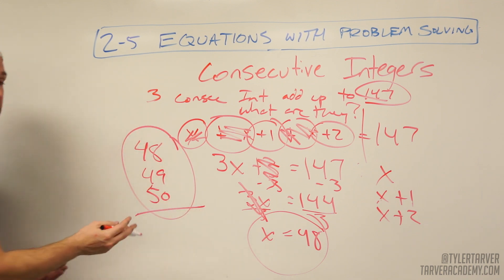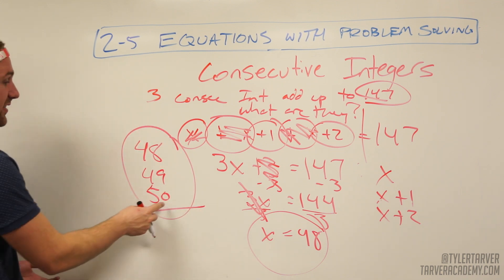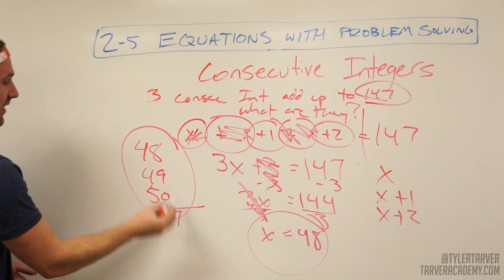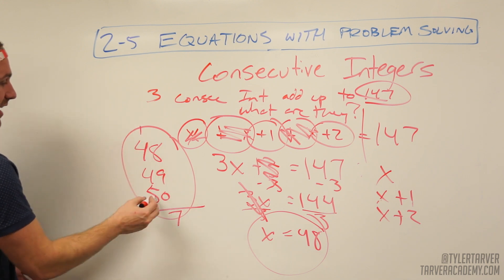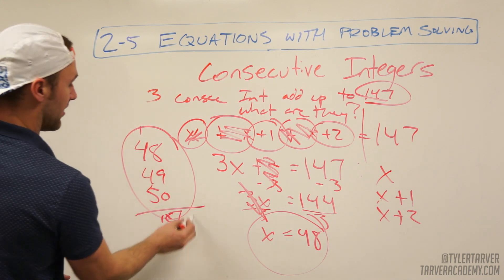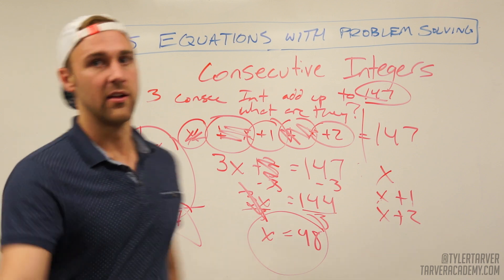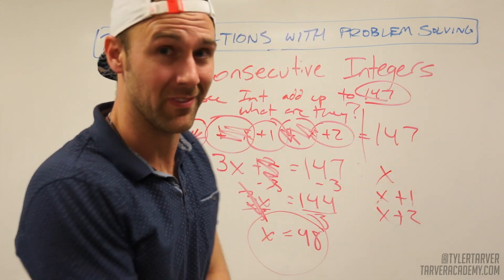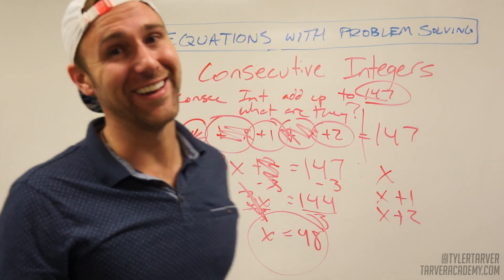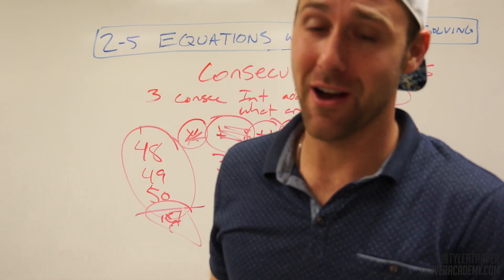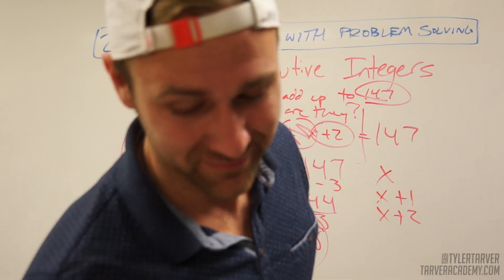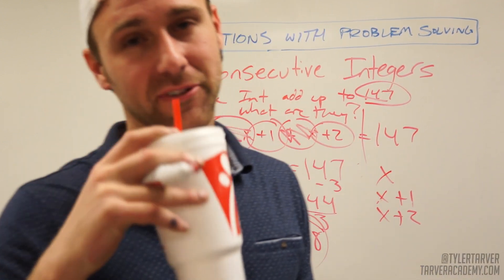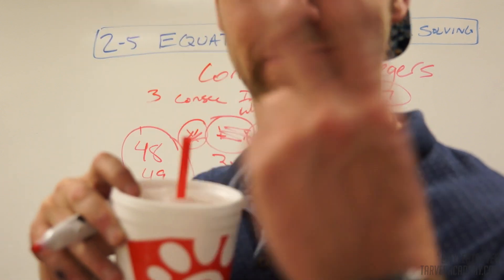You can always try that out to make sure it's correct — add them up: 48 plus 49 plus 50 equals 147. It's pretty good. Sponsored by Chick-fil-A Diet Lemonade. Delish.